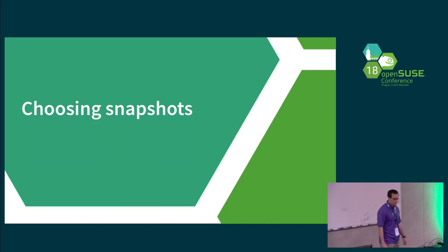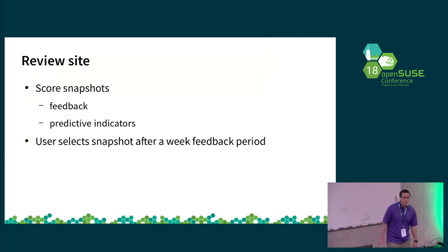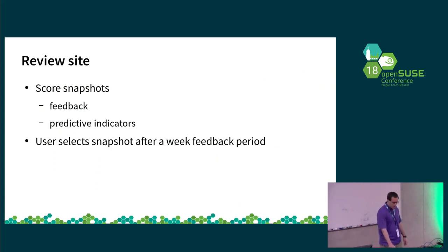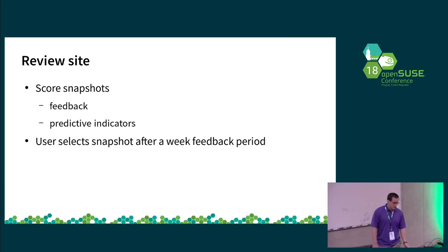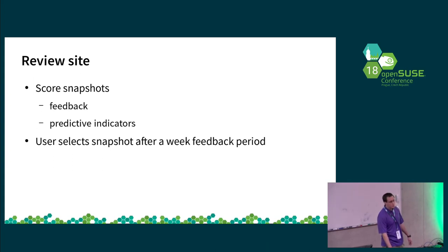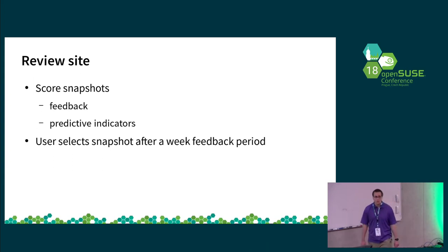Now let's review from the user perspective the tools I've added to help you choose snapshots, since you now have a lot more flexibility on when and what you update to. Basically, a score is introduced for each snapshot. There are two main parts: a feedback score, which comes from looking at the factory mailing list and possibly Bugzilla, to get an idea of how many problems users are facing; and a predictive score, which looks at particular package versions and where they are in their release cycle, or whether the package churn itself was huge — things like that which have caused issues in the past.